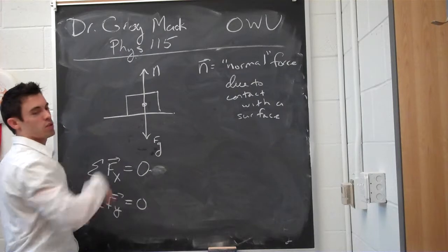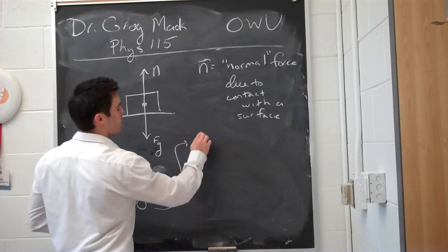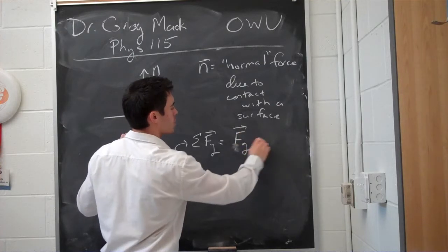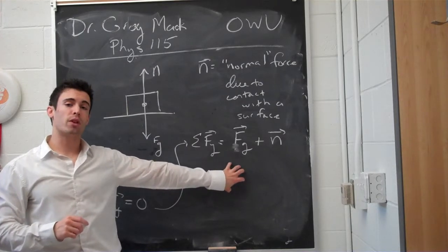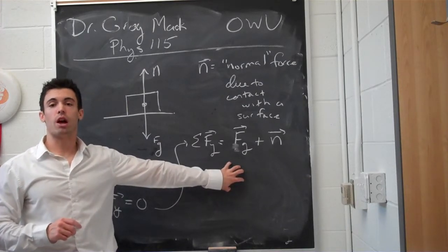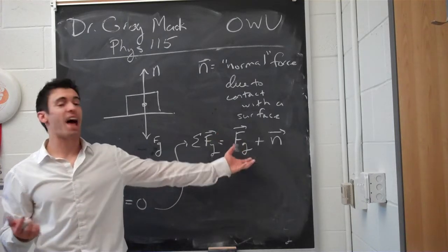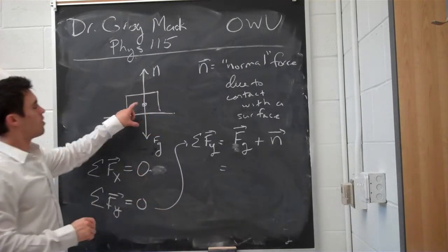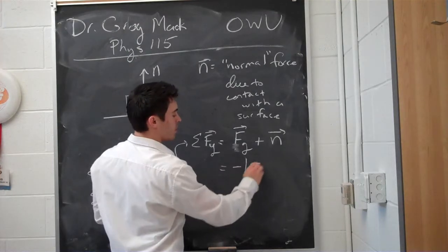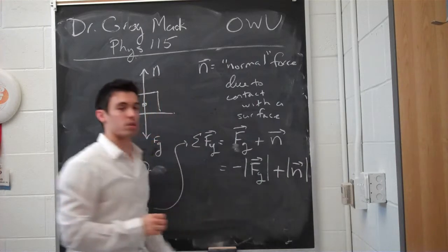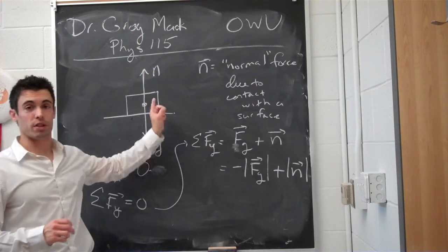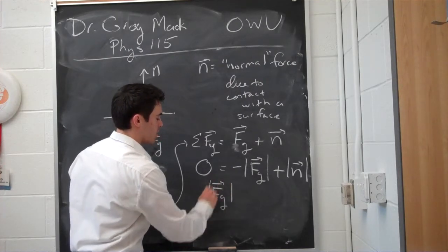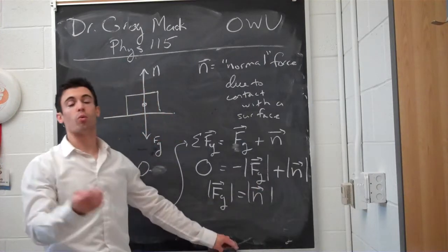In this case, there are no forces in the x direction, so that's trivially 0. In the y direction, the sum of the forces equals the gravity force plus the normal force. To analyze this properly using magnitudes and directions — since force is a vector — the sum of the forces in the y direction equals negative the magnitude of the force of gravity plus positive the normal force. So the normal force is equal to the gravitational force, or the weight of the object — that is, mass times 9.80 meters per second squared.